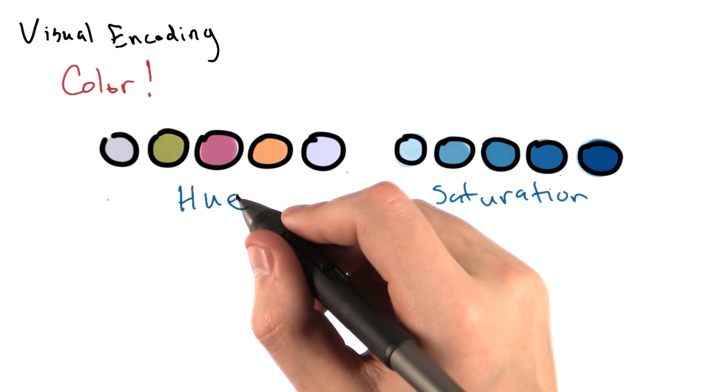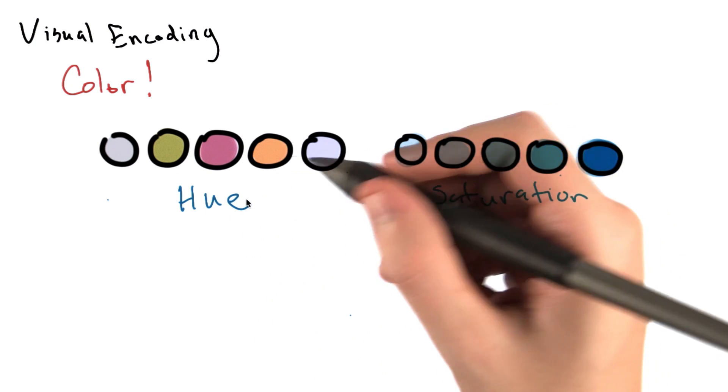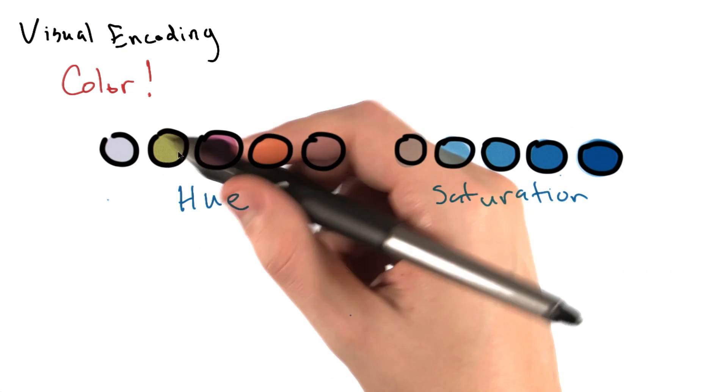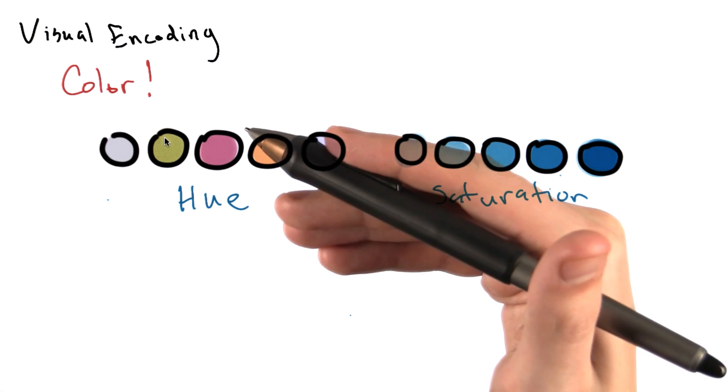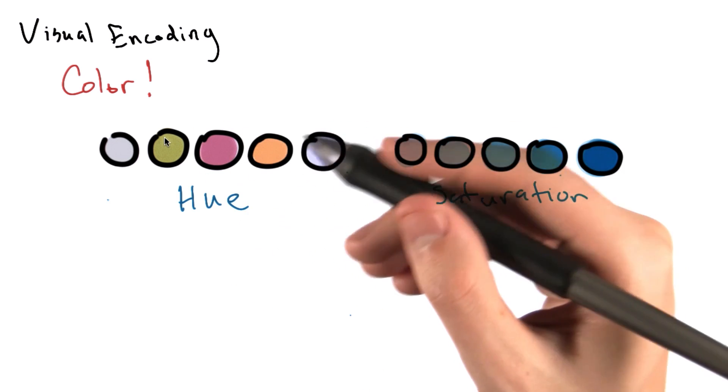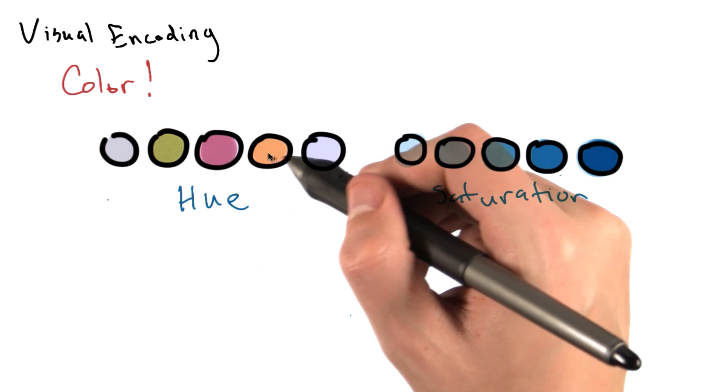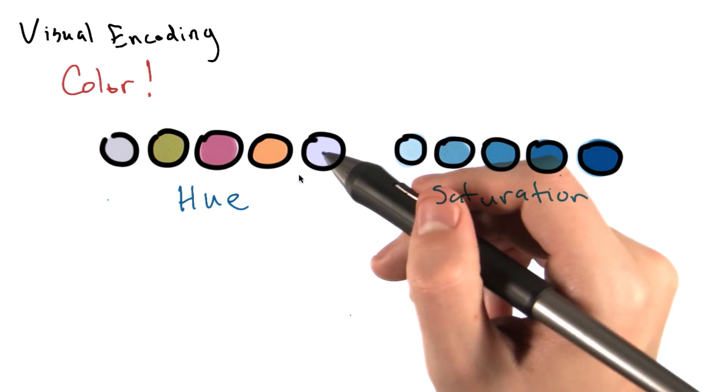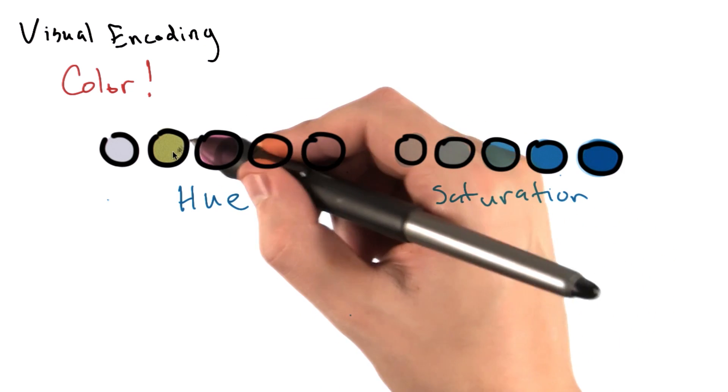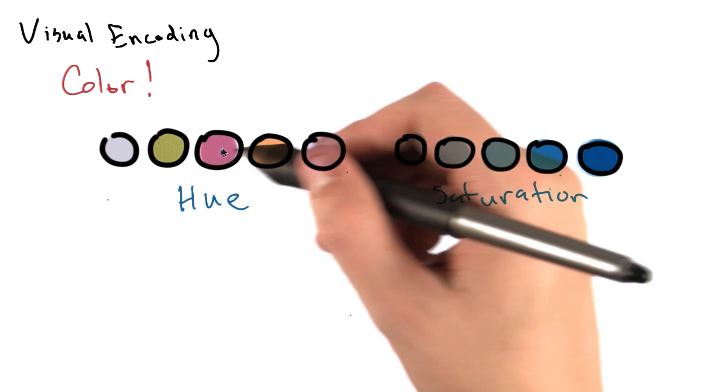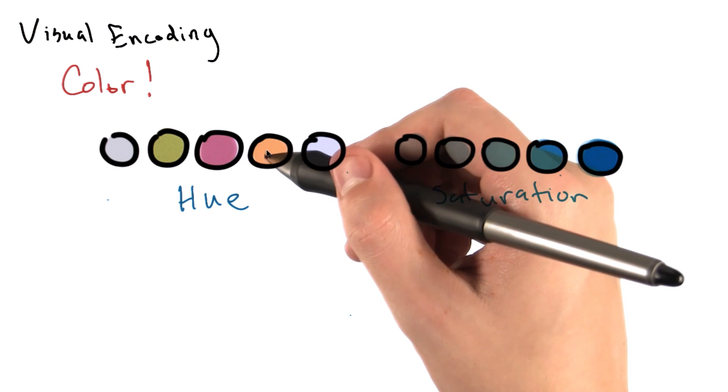Color hue is what we typically refer to as color, like red or green or blue. Different colors used together usually indicate categorical data, where each color represents a different group. So if we were using our baseball data, maybe green is shortstops, red is outfielders, and orange is second baseman, something like that.